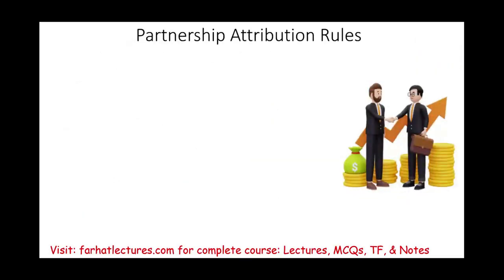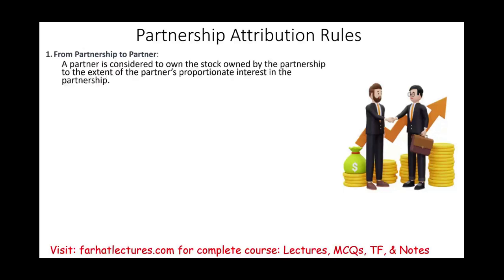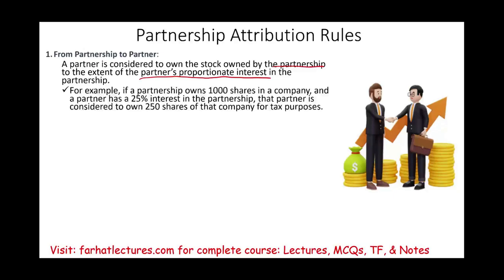You can also be an owner through partnership attribution rules. From partnership to partner: a partner is considered to own stock owned by the partnership in proportion to the partner's interest. For example, if a partnership owns 1,000 shares in Company A and you own 25% of the partnership, you are deemed to own 250 shares of Company A.